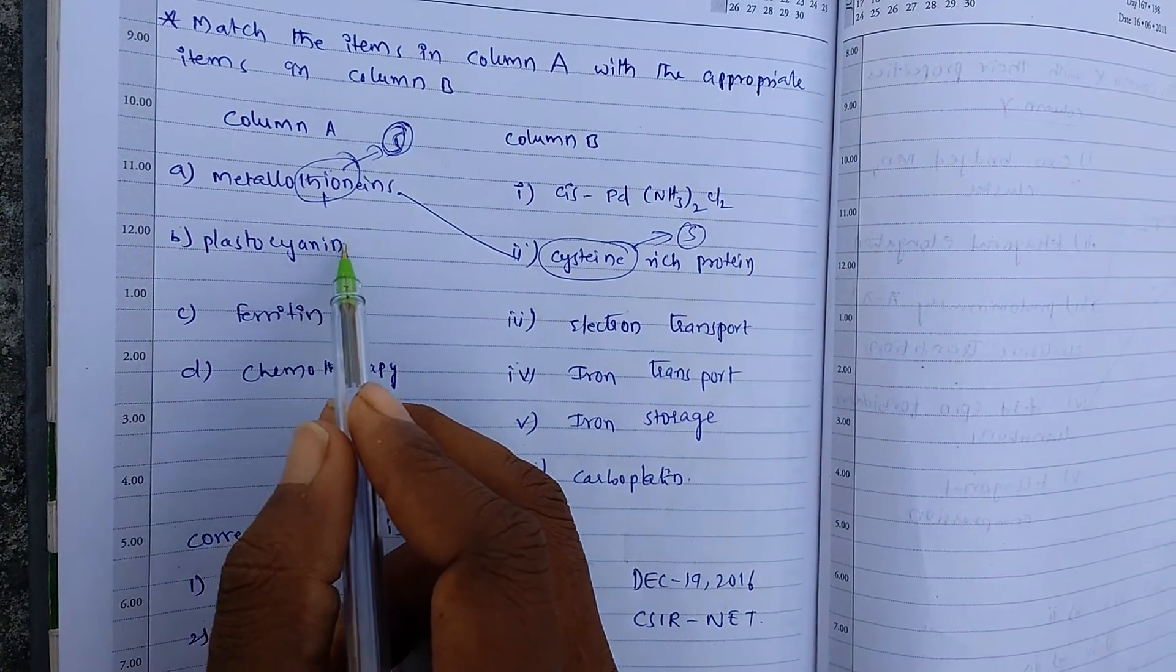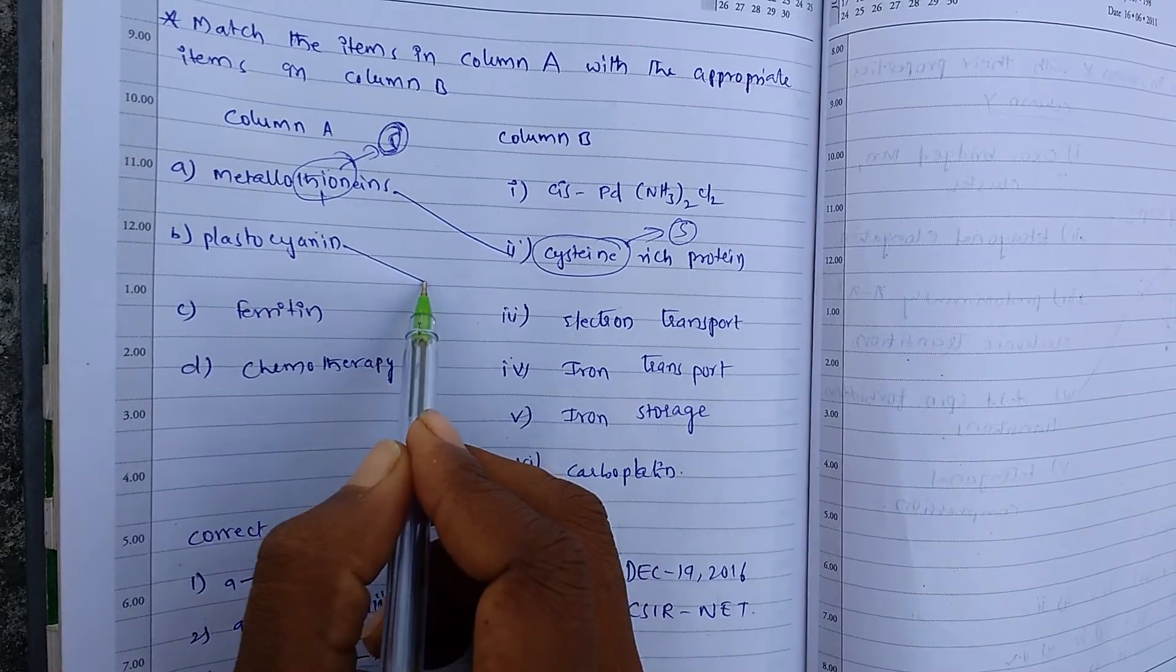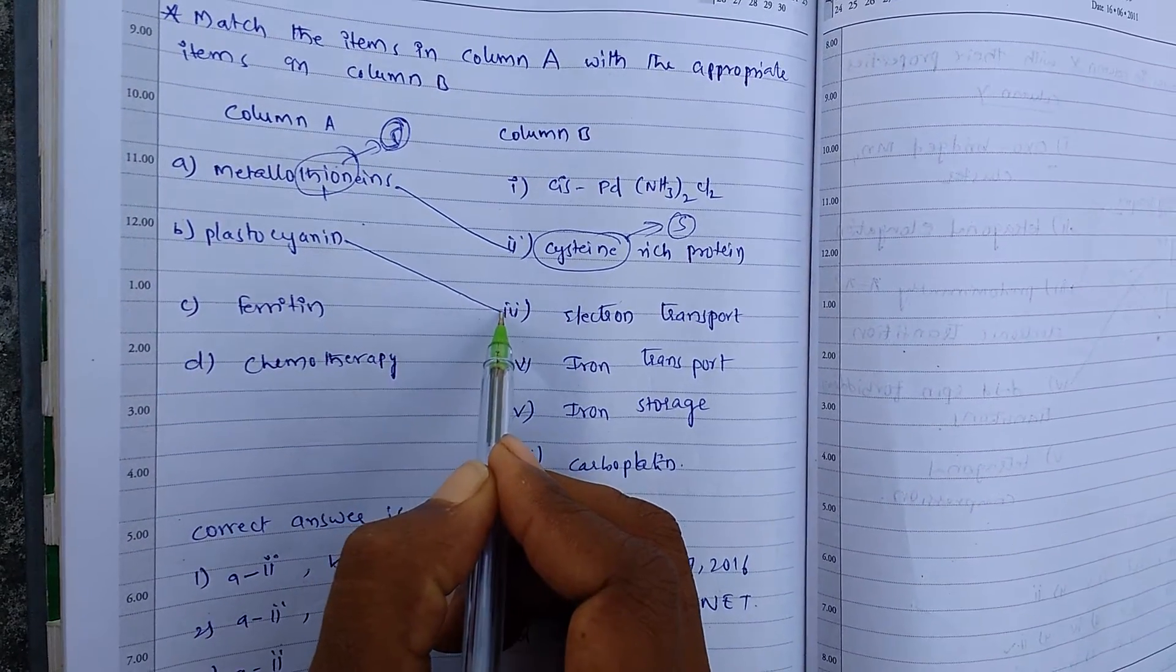cysteine has also sulfur. So here it is, first option. And plastocyanin. Plastocyanin, so it is copper containing protein. It is in, it involves in electron transport.